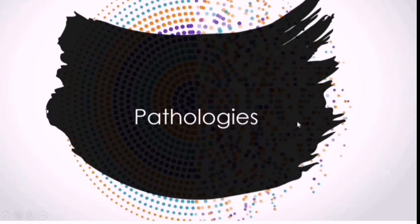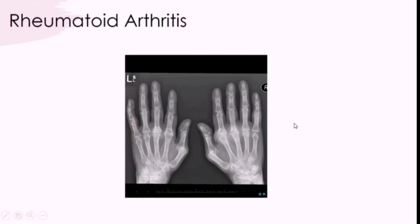Rheumatoid arthritis is a chronic autoimmune multi-system disease that predominantly attacks the synovial tissues and joints. The radiographic signs include soft tissue swelling, osteoporosis — initially periarticular but later generalised — and erosions, where the smooth outline of the metacarpal heads in particular is disrupted and the bone is destroyed.